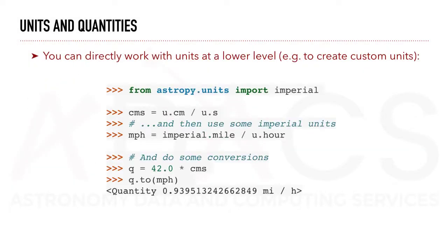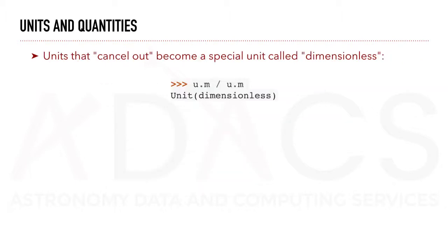You can directly work with units at a lower level to create custom units. For example, here we import the imperial system. We create a centimeter per second unit, a mile per hour unit, and then we can easily convert a quantity from centimeters per second to miles per hour. Units that cancel out become a special unit called dimensionless.